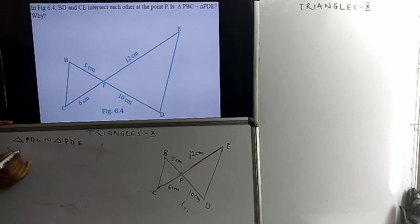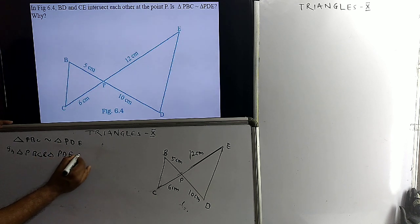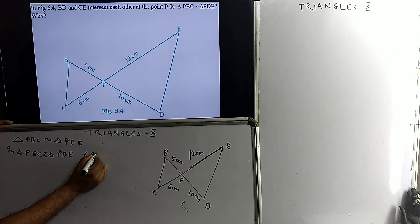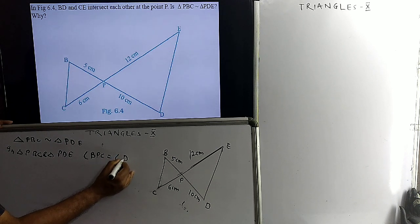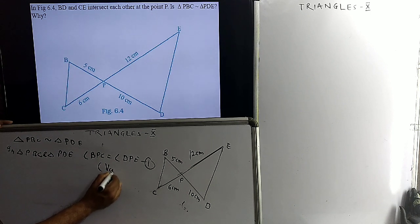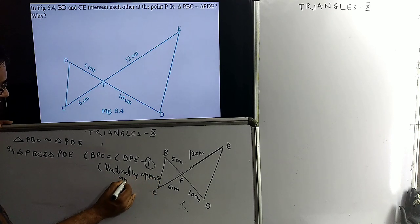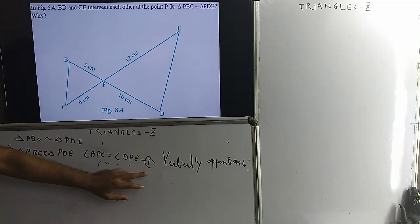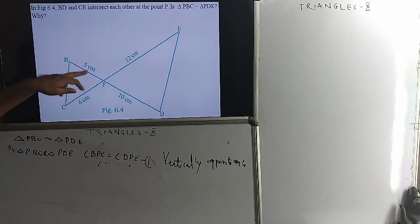In triangle PBC and triangle PDE, angle BPC is equal to angle DPE. These two angles are equal because these are the vertically opposite angles. This is statement number 1.